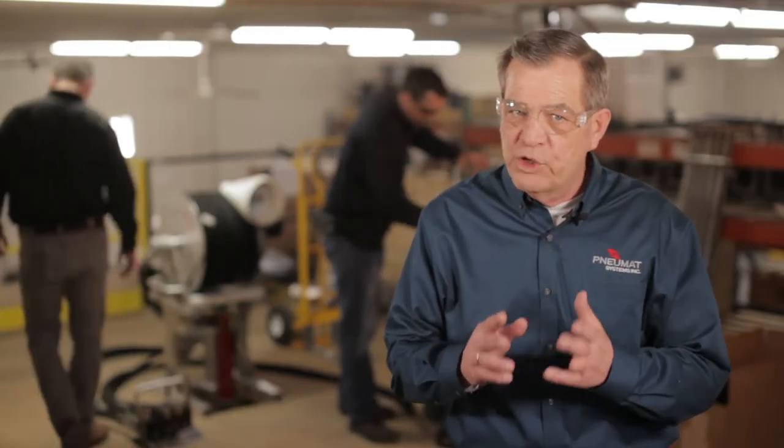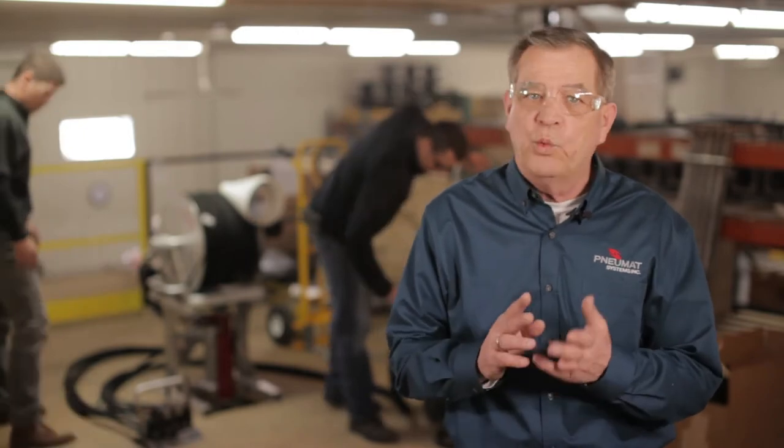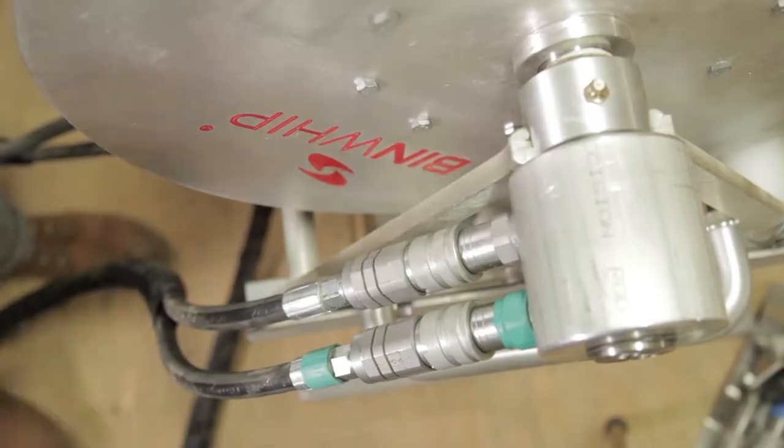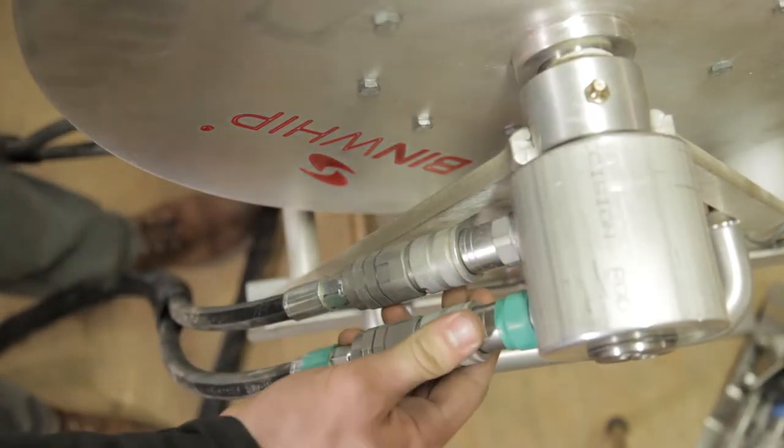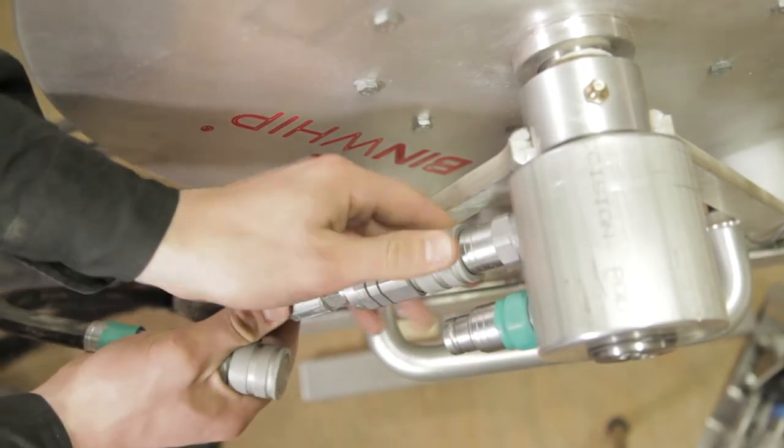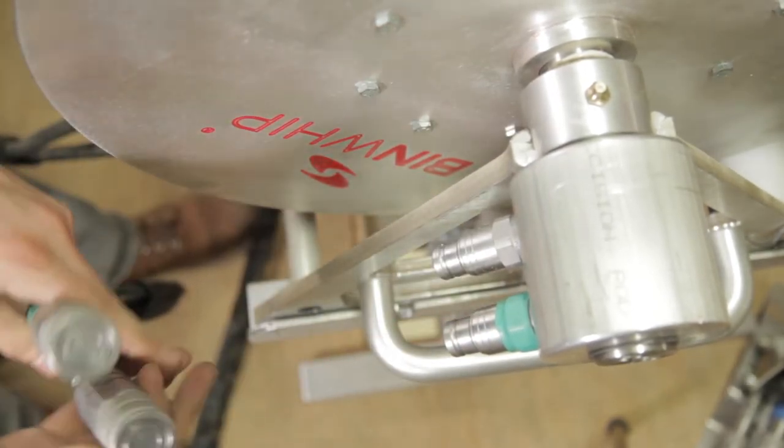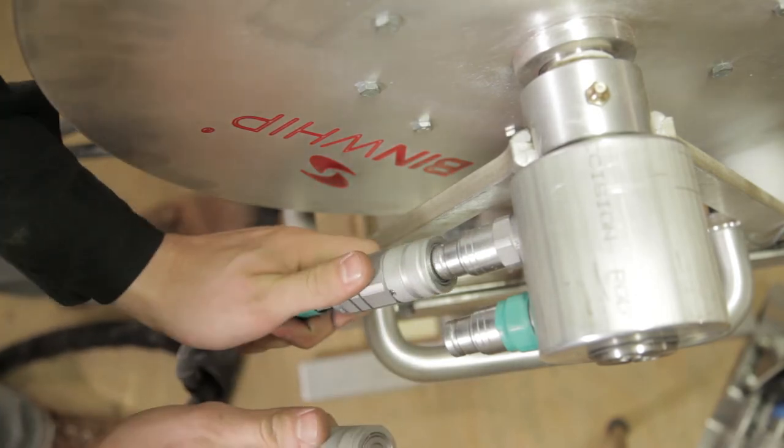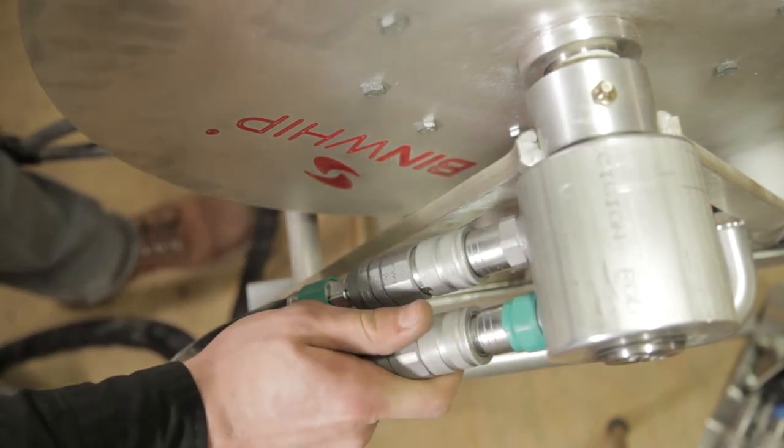Note that while the hose reel control circuit only has one correct orientation, the boom and whip head circuits are reversible. Depending upon your situation and preferences, you can easily switch the orientation of the hoses to reverse the action of the controls.